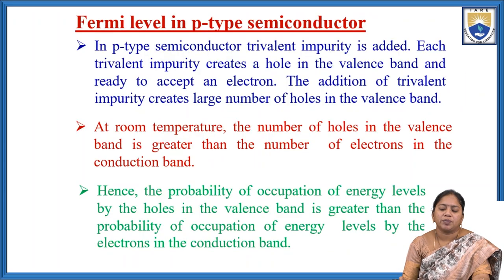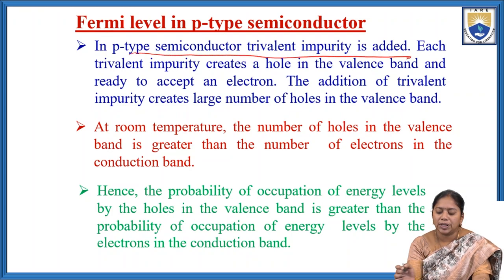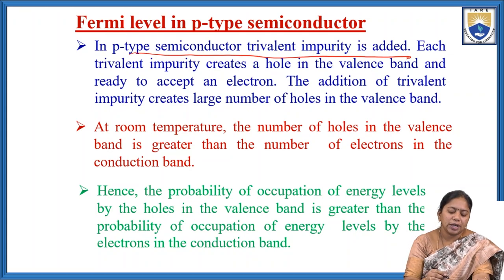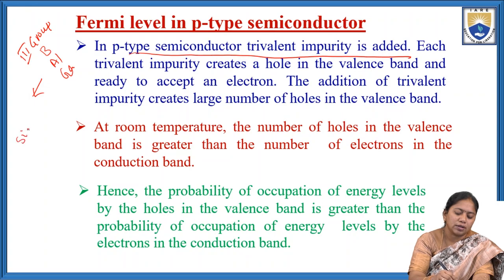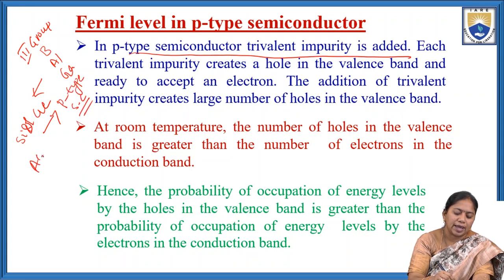The second topic is Fermi level in P-type semiconductors. In P-type semiconductors, trivalent impurity is added — these are third group elements. For example, boron, aluminium, or gallium is added to silicon or germanium to form P-type semiconductors. P-type semiconductors contain acceptor-type impurities.